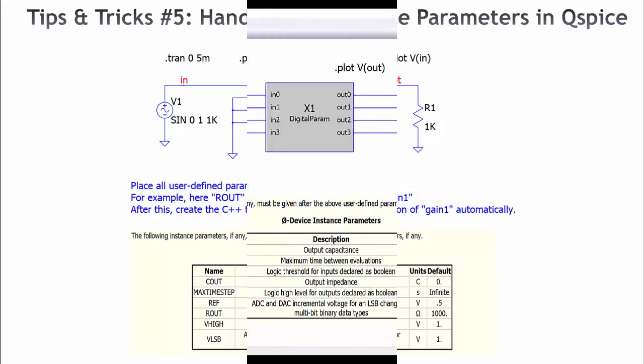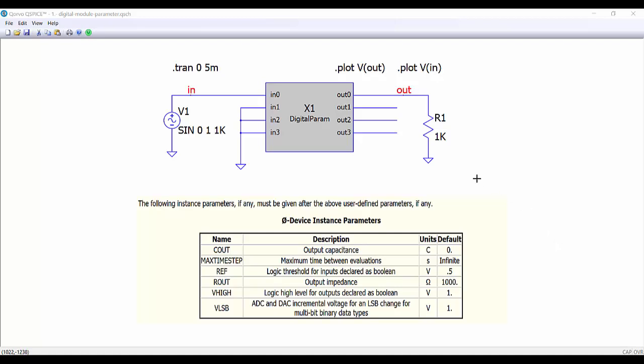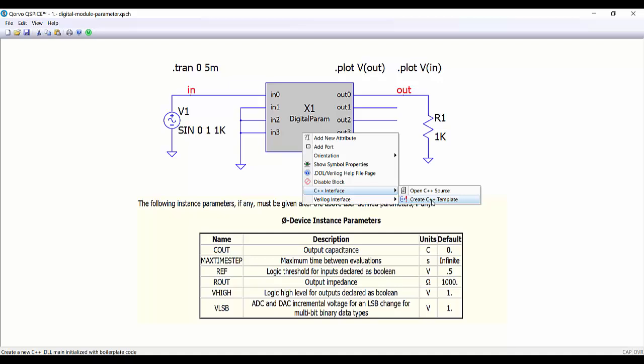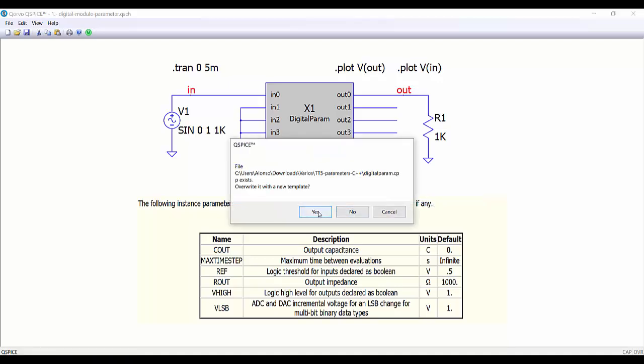So let's see how to do this. We're going to use this as an example. Here we have our C++ module, we are injecting through this input a sinusoidal voltage, and then we are going to generate here an output voltage. We're going to create now a C++ interface. We create a new template, we say yes here.